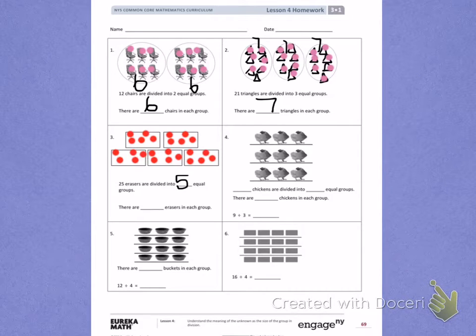When I look at those groups, I can see each group has five dots. So there are five erasers in each group.